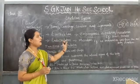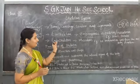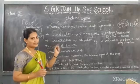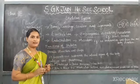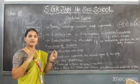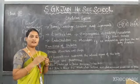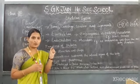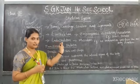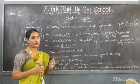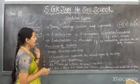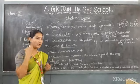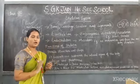In the exoskeletal system, if the bones originate from the embryonic ectoderm or mesoderm, that is called the exoskeletal system. For example, tortoise, snail, and birds have bones on the outside of the body — meaning the bones originate from the embryonic ectoderm or mesoderm in these organisms. Endoskeleton means the bones originate from the mesoderm — for example, all vertebrates.